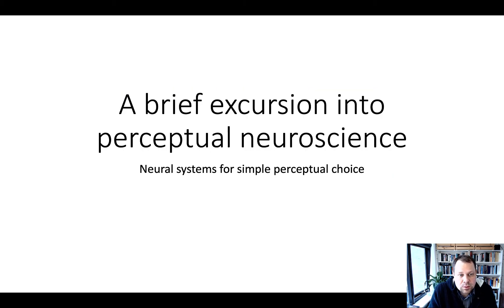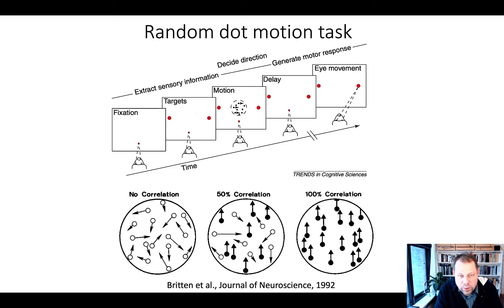To give you an overview of where the drift-diffusion model comes from and that it's biologically plausible, I'd like to make a brief excursion into perceptual neuroscience and talk about the neural system involved in simple perceptual choice. The way that perceptual choice is commonly studied is via the random dot motion task, illustrated here on this slide.